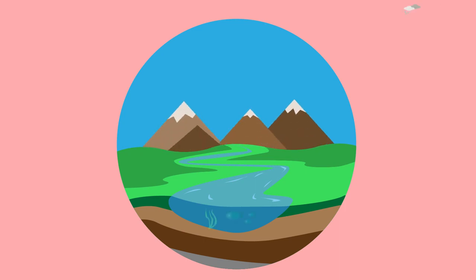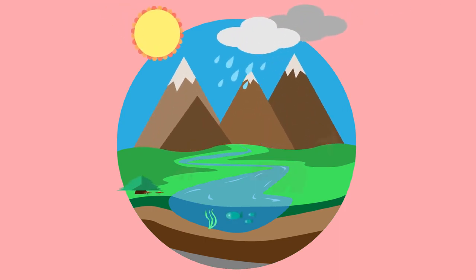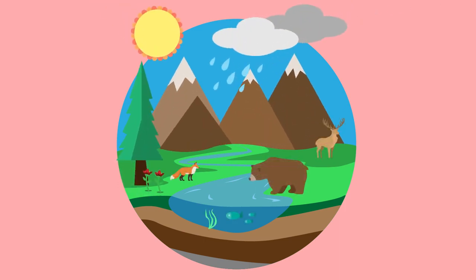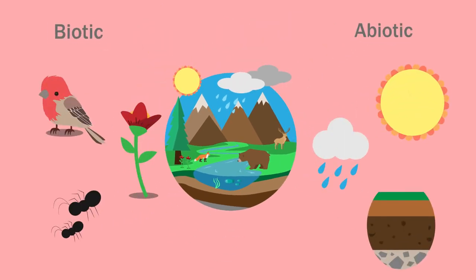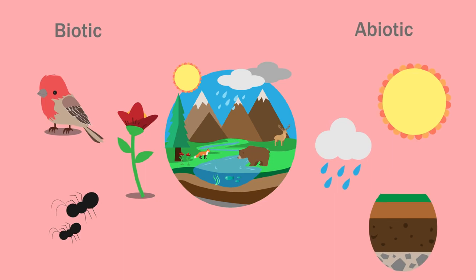Ecosystems are large, often highly complex areas of our environment. In today's video, we will be discussing some of this complexity as it relates to how different aspects of an ecosystem interact with one another. As we discussed in a previous video on ecosystem components, ecosystems are composed of both biotic or living and abiotic or non-living components. Let's start by discussing the abiotic parts of an ecosystem.